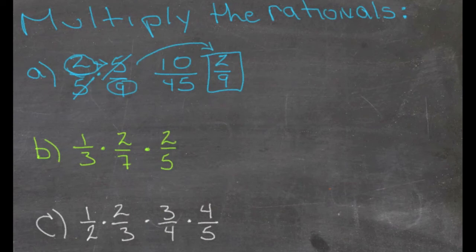On B, we have 1/3 times 2/7 times 2/5. There aren't any things that are the same on the top and bottom, so we're going to go ahead and multiply straight across. 1 times 2 is 2, and 2 times 2 is 4, so we have 4 in our numerator.